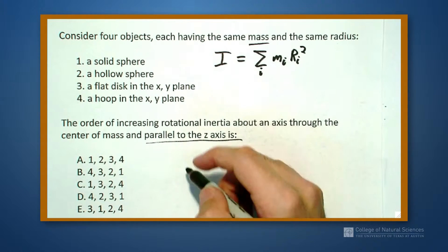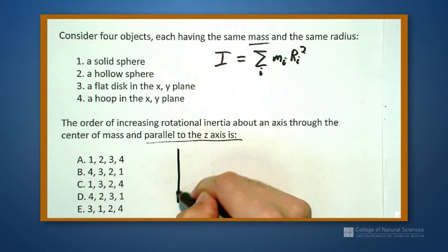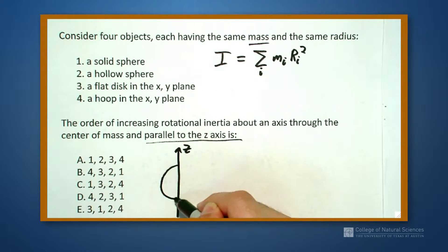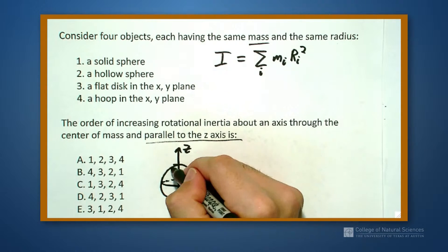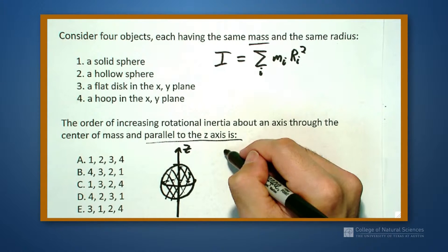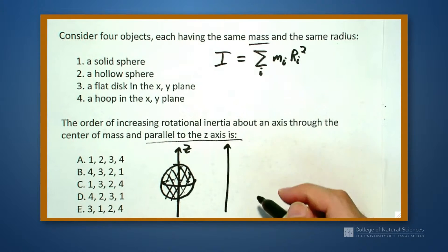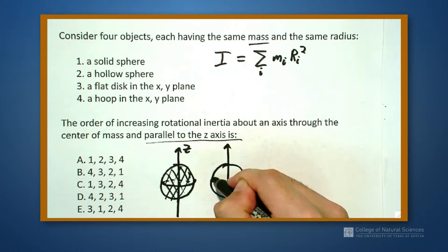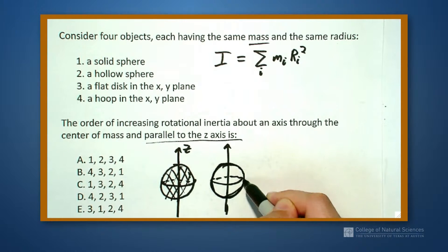So let's draw some of these things. We have a solid sphere, we have our z-axis pointing in this direction, we have our sphere that looks like this and it's solid. We have again our z-axis. This time we have a hollow sphere, same radius but this time it's hollow. So all of its mass is concentrated on this outside edge.